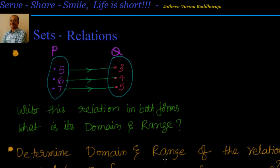Let's look at this example. We have been given two sets diagrammatically. We have 5, 6, 7 as part of set P and we have 3, 4, 5 elements as part of Q. Write this relation in both the forms, that is set builder and roster form. What is its domain and range?